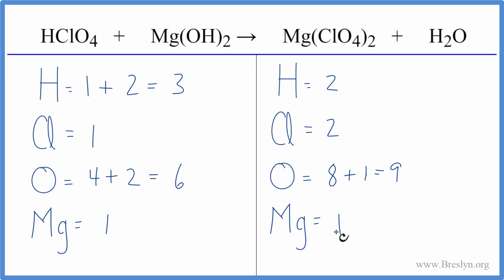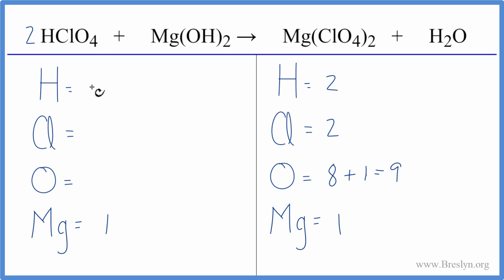Let's leave the oxygens and hydrogens till last. To fix the chlorines: we have two on the product side and one on the reactant side, so let's put a coefficient of two in front of the HClO₄. Updating things: we have one times two for the hydrogens, plus the two times one — four hydrogens total. For chlorines, one times two — we've balanced the chlorines. That was our goal.